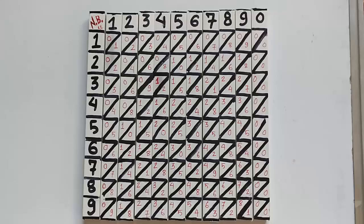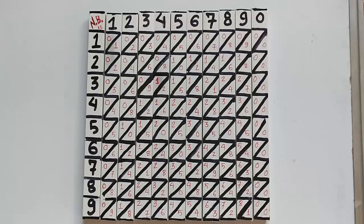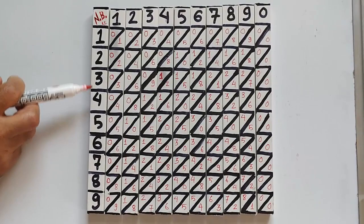Now let's prepare this bone as I've shown you here. Vertically we have numbers from 1 to 9. Horizontally we have numbers from 1 to 0.